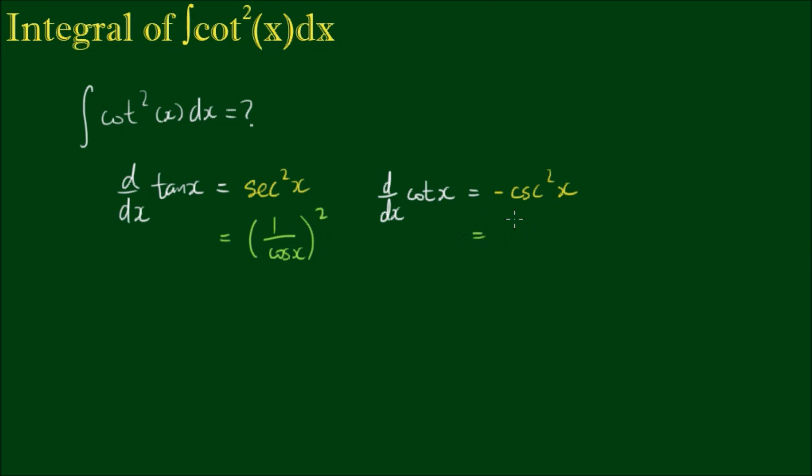And the cosecant is defined as the reciprocal of sin x or 1 over sin x and the square of that is 1 over sin x all squared and we have a negative in front of that.